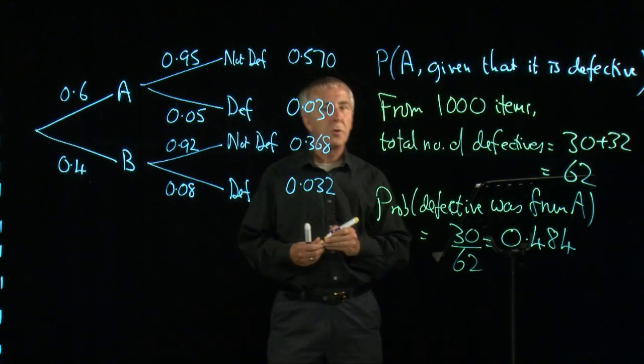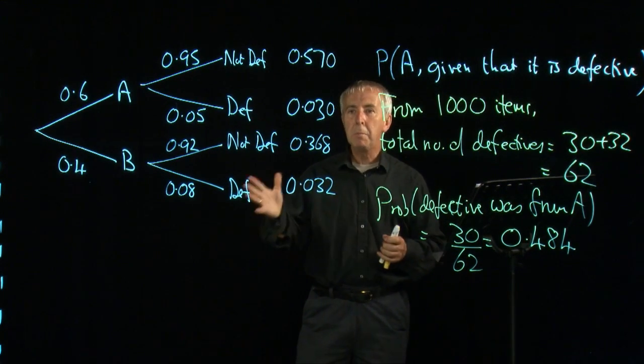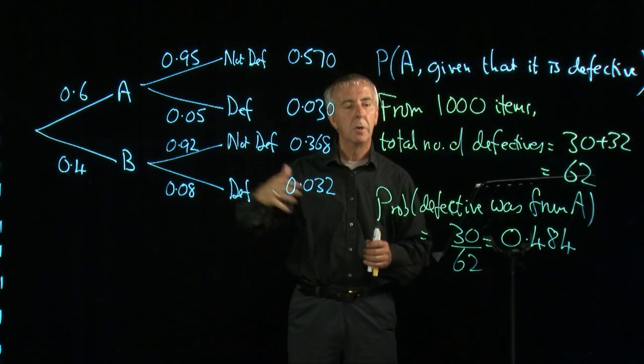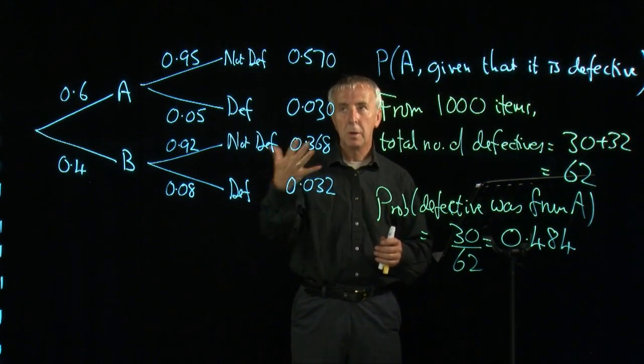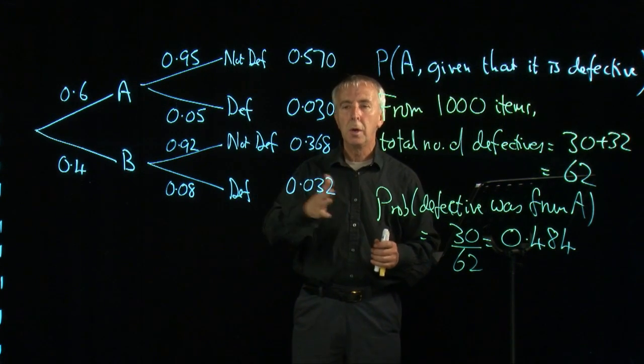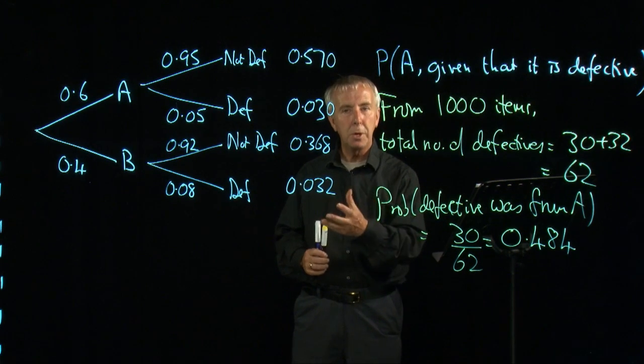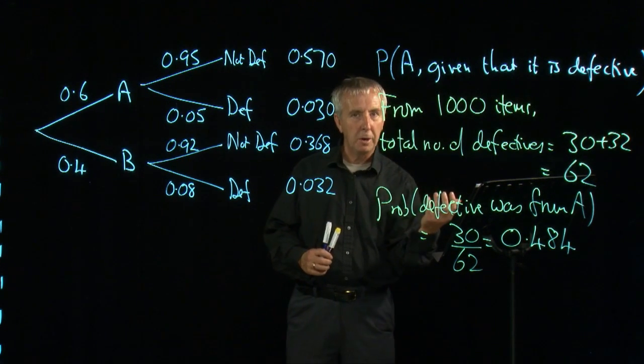And so this is a diagnostic testing. We're looking back from the result. We know that there are different possible causes of the result. And we can use this method, Bayes' theorem as it's called, working backwards along the tree diagram to assess the probability of a particular cause of a final event.